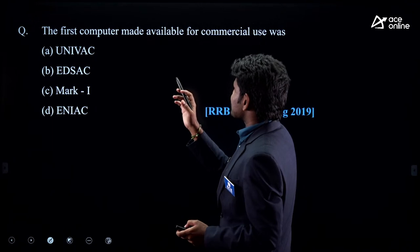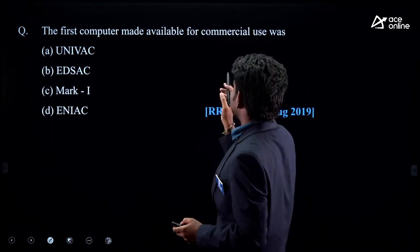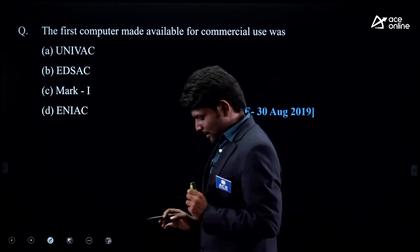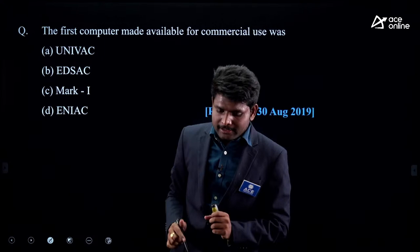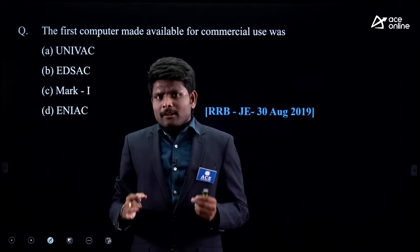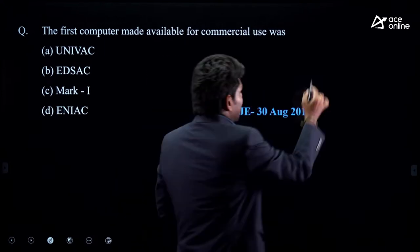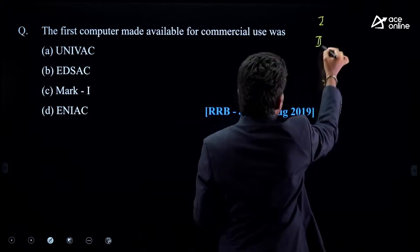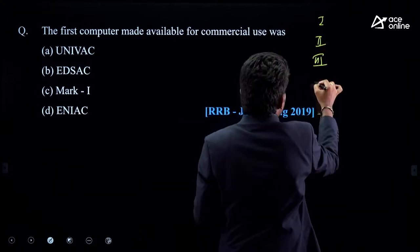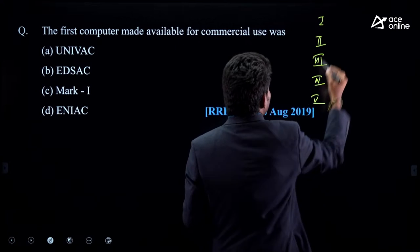Next question: 'The first computer made available in commercial use was...' Think logically. There are five generations: first, second, third, fourth, fifth.